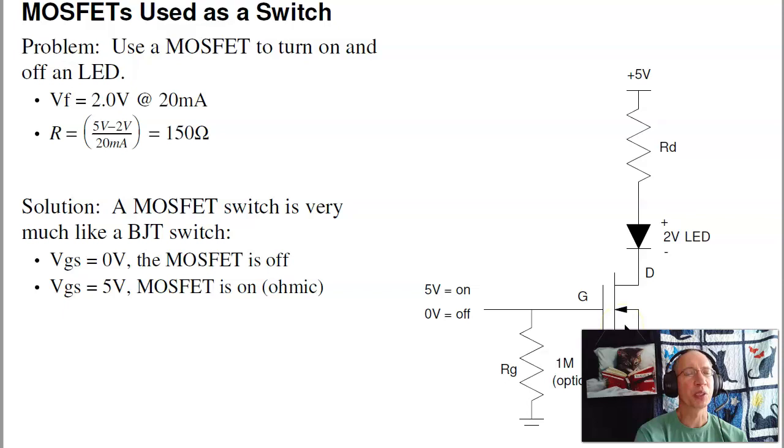Again, we're doing the boolean on-off, 0 volts off, 5 volts, 0.1 ohm.